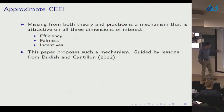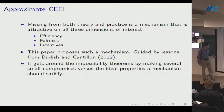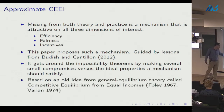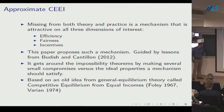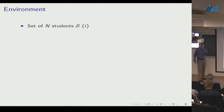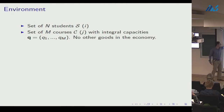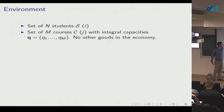The mechanism will get around impossibility theorems by making several small compromises versus ideal properties, and is based on the competitive equilibrium from equal incomes idea attributed to Duncan Foley and Hal Varian. Formally: there's a set of n students, a set of m courses with integer capacities q_j, no numéraire good, each student i has a set of permissible schedules Ψ_i encoding legal bundles, and a utility function over bundles.